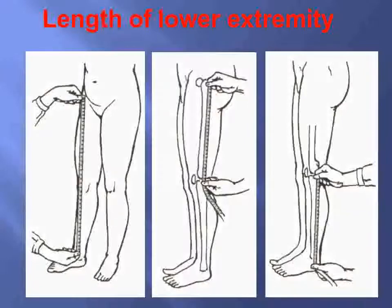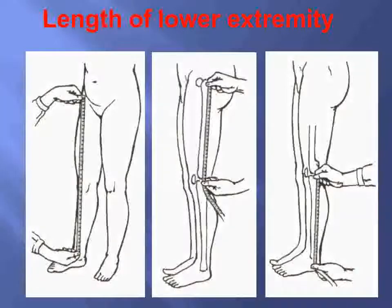For the lower extremity, the landmark is the anterior superior iliac spine distally to the tip of the medial malleolus — that is the total leg length. The length of the femur is from the tip of the greater trochanter to the knee joint gap. The length of the tibia is from the knee joint gap to the tip of the lateral malleolus. Always compare measurements bilaterally.